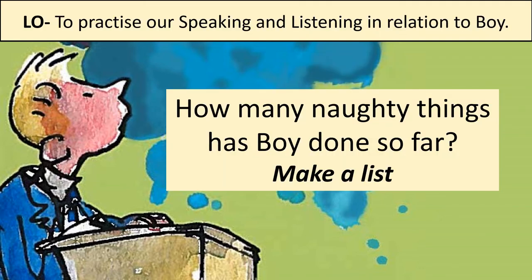I want you to think about how many naughty things Roald Dahl — or 'Boy,' as we know him from the autobiography — has done so far. Try to make a list. There are five spaces in your workbook, but I bet you can think of more than five. You might need to flick through the book or rewind the audiobook. Now that you've done that, I'd like you to think about reading the next chapter titled 'Goat's Tobacco.' There's a hint in the pictures on the PowerPoint slides. Read that chapter and think about whether you can add any more naughty incidents to your list.